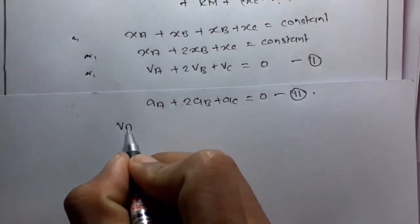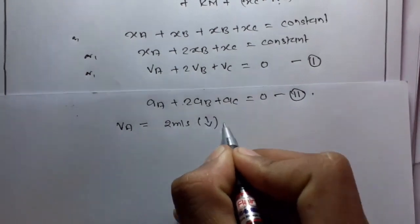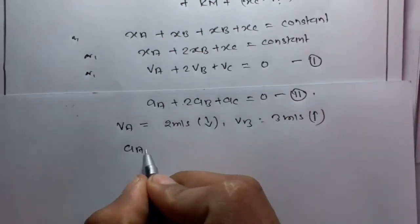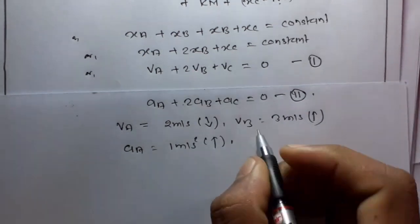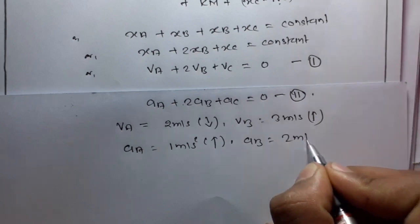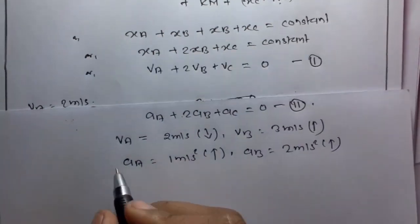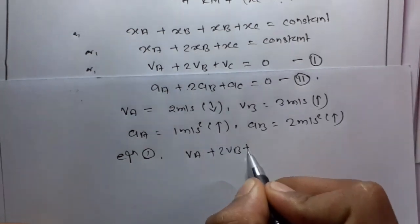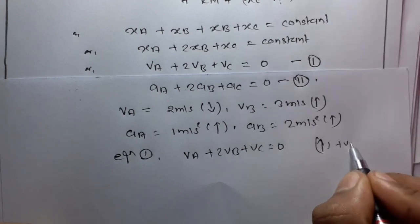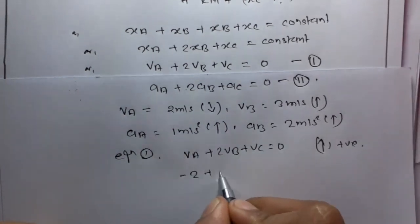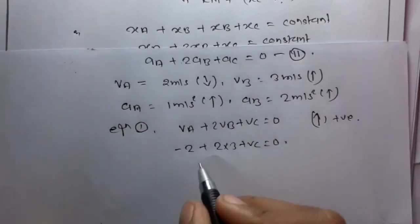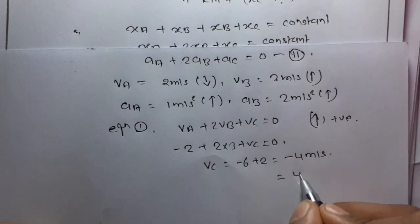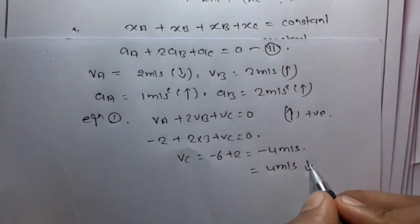We have VA = 2 m/s downward, VB = 3 m/s upward, AA = 1 m/s² upward, and AB = 2 m/s² upward. From equation 1, taking upward as positive: VA + 2VB + VC = 0, so minus 2 + 2 × 3 + VC = 0, giving VC = minus 6 + 2 = minus 4 m/s. So VC = 4 m/s in the downward direction.